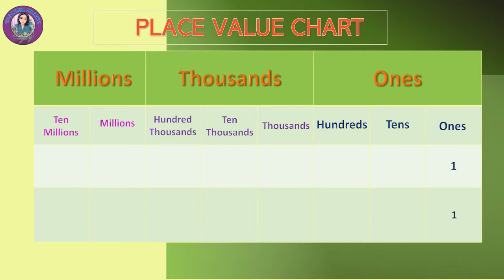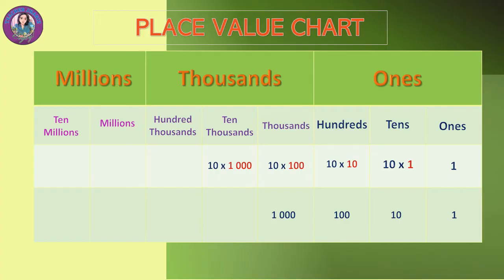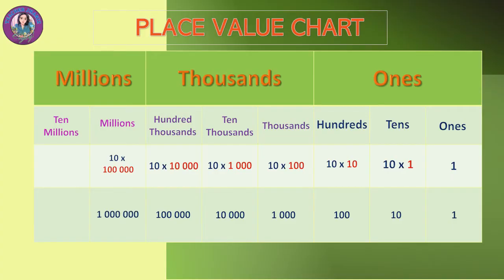Ones has a value of one. Ten times one gives a value of ten. In the hundreds place, its value is one hundred. In thousands, ten times one hundred is one thousand. In ten thousands, ten times one thousand is ten thousand. In hundred thousands, ten times ten thousand is 100,000. In millions, ten times 100,000 is 1 million. In ten millions, ten times 1 million is 10 million.